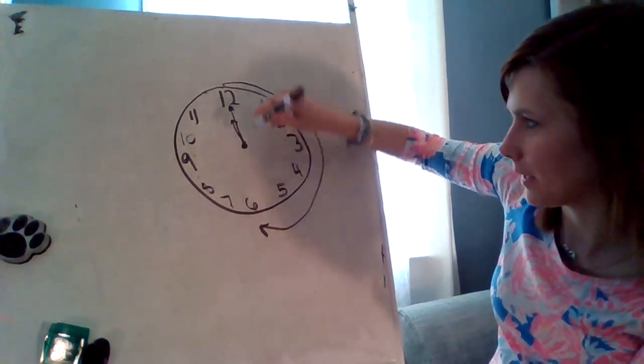Read the times, draw the hands on the analog clock, and write the times on the digital clock. The first one says 5 o'clock — that big minute hand is going to be pointing at the 12, and the small hour hand is going to be pointing at the 5. We would write it on our digital clock as 5:00.